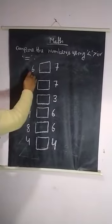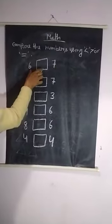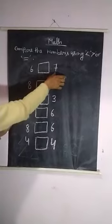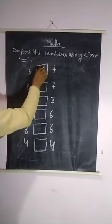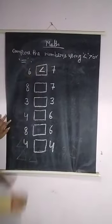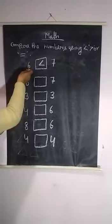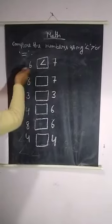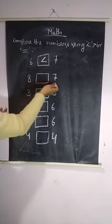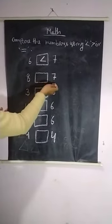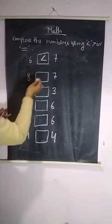6 box 7. 6 box 7 — 7 greater than. 8, 7. 8 box 7 — 8.